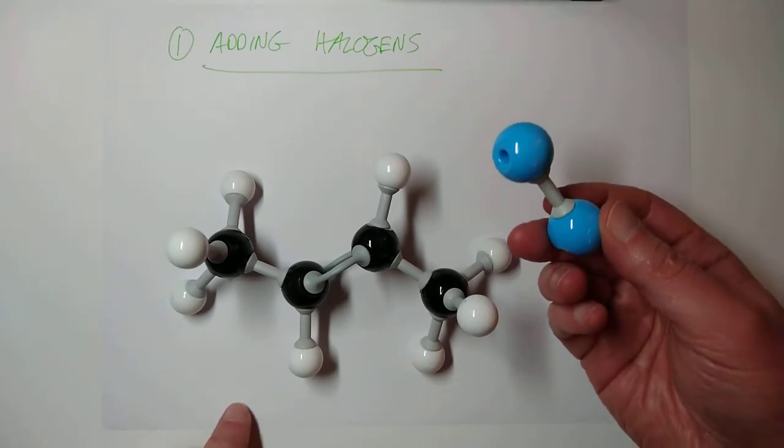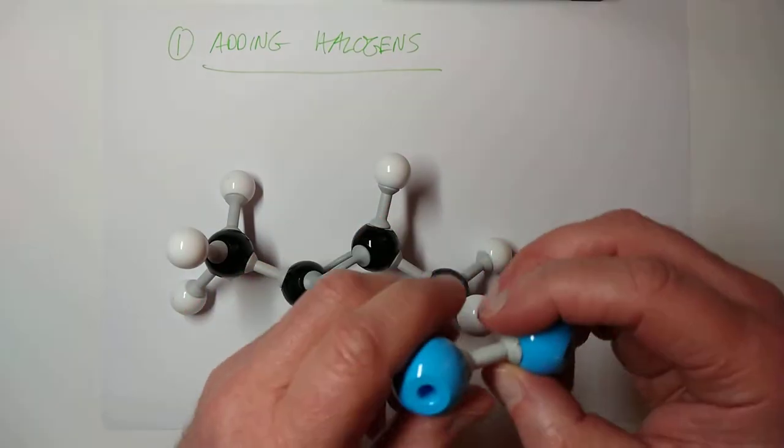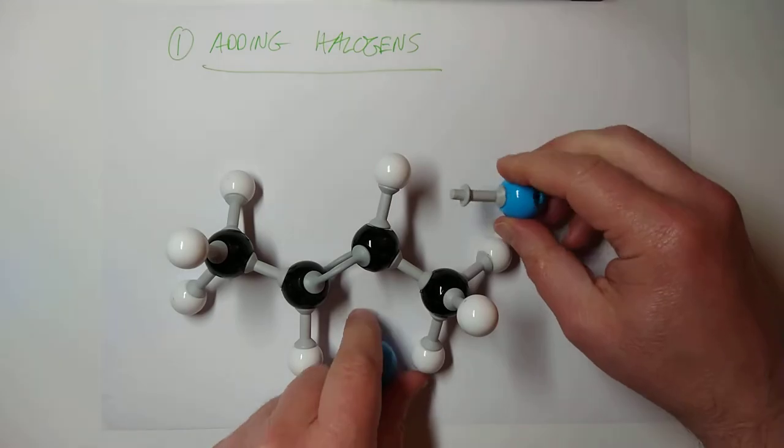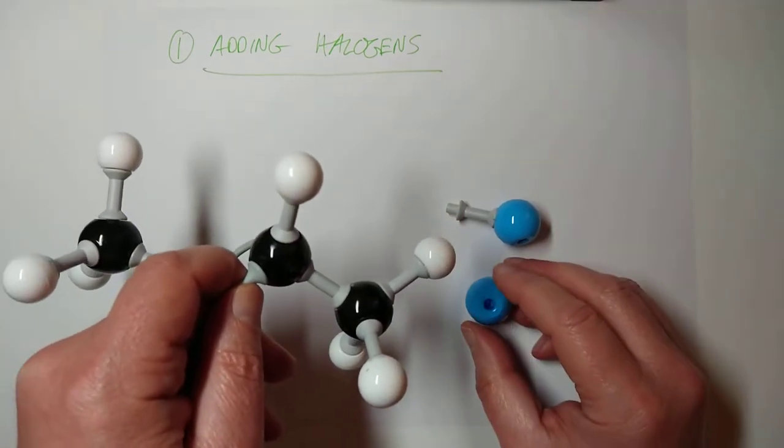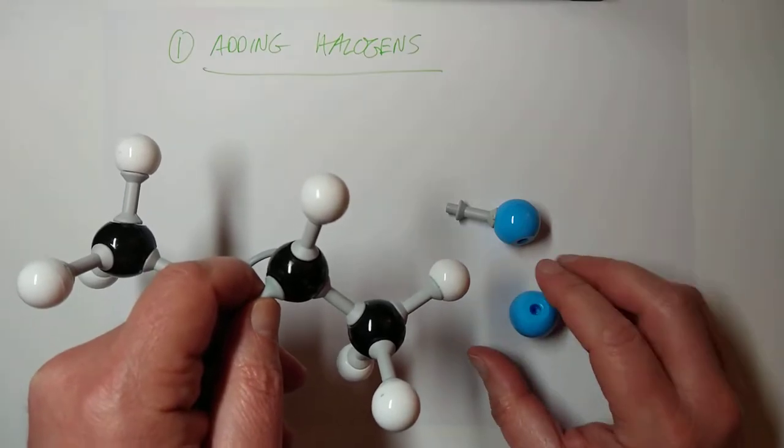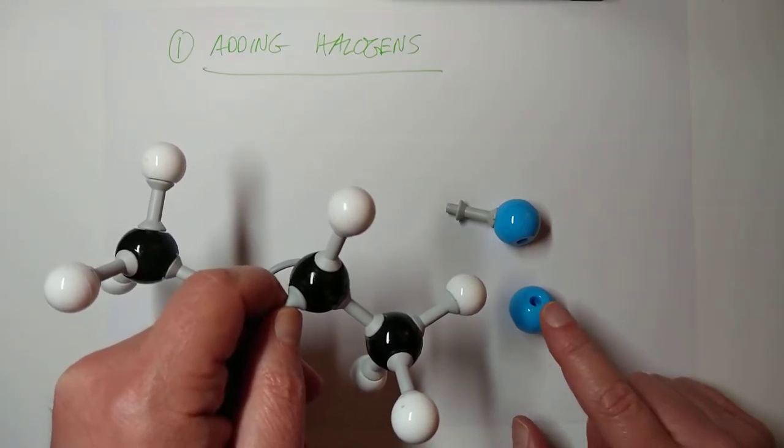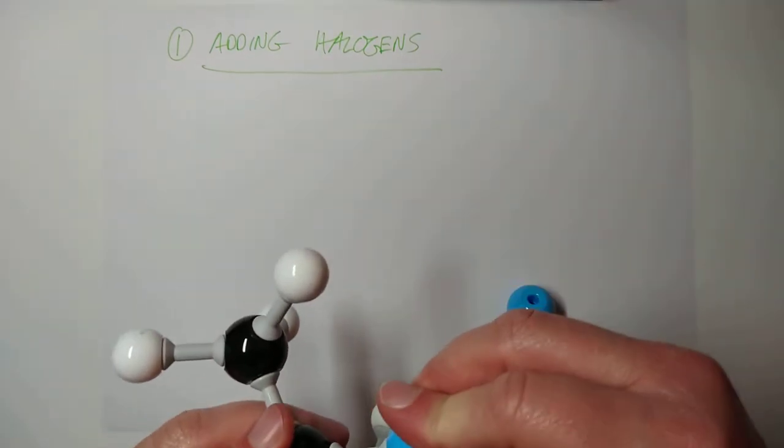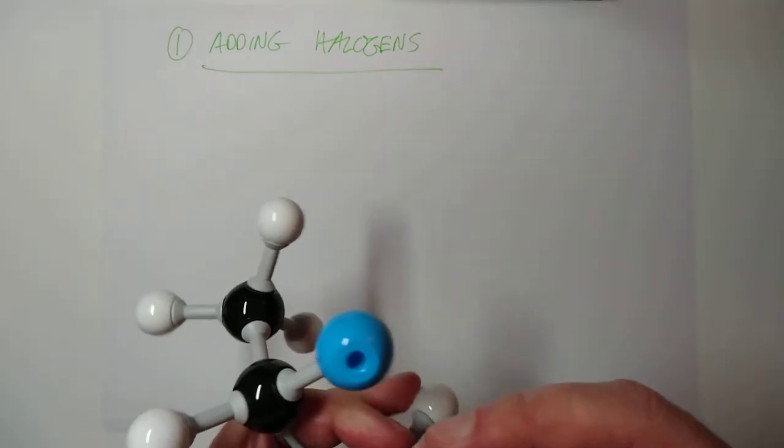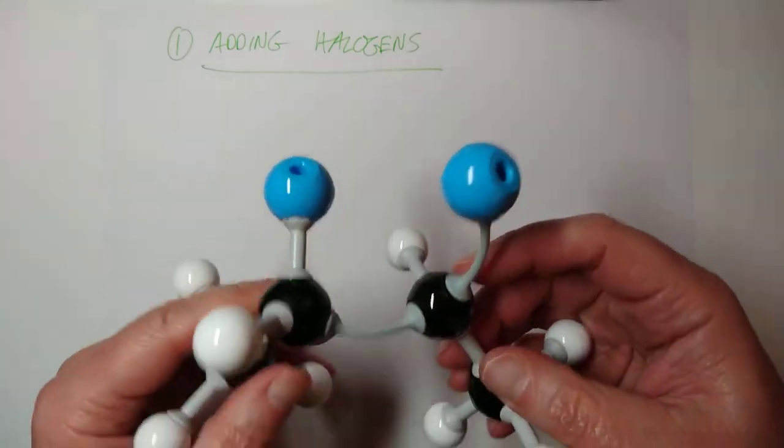So, let's literally do an addition reaction on this molecule. Let's break apart our bromine molecule and let's break the double bond. You notice we don't break the whole double bond, of course, we just break one of them. Are you going to stay still, bromine atom? Thank you. And we have created this.